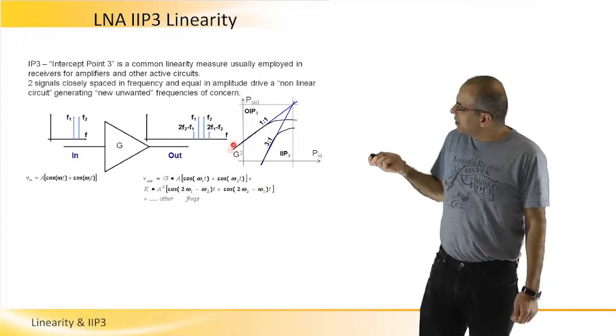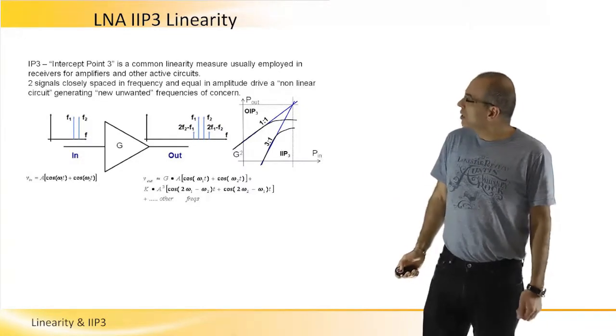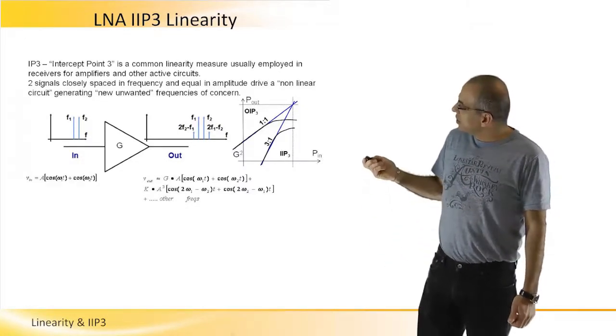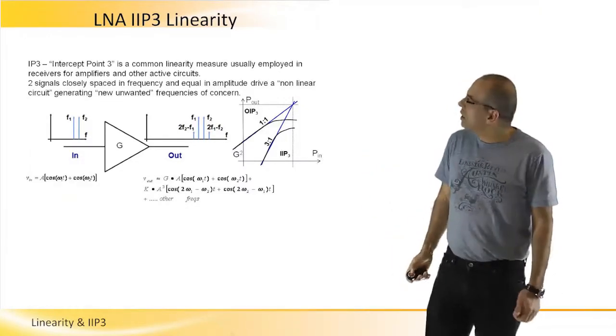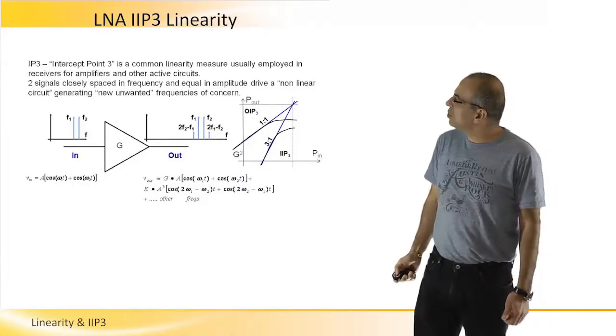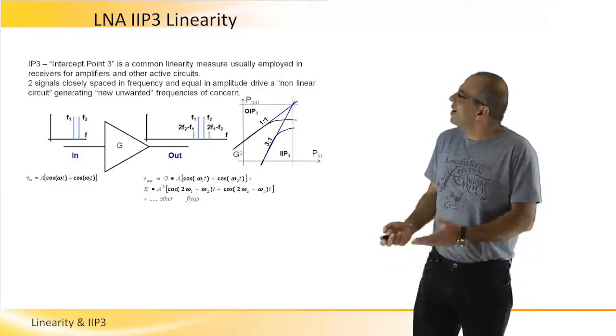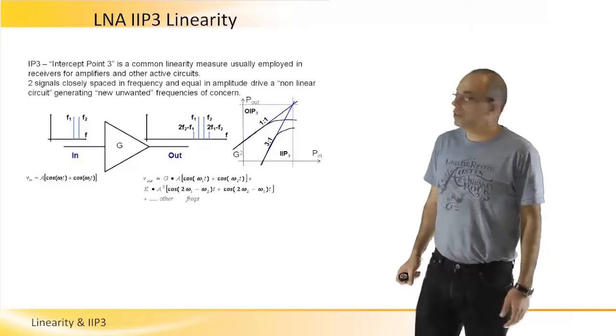we will find a theoretical point of interception, which is called the IP3, the intercept point 3, to define the linearity of the circuit.